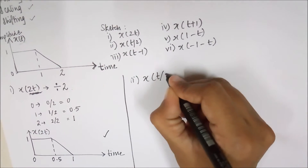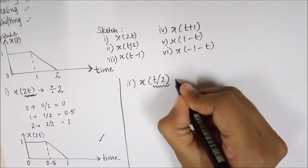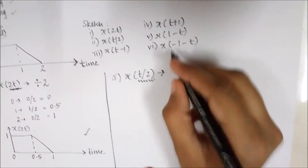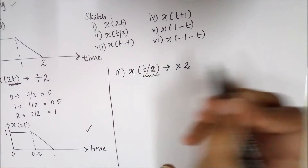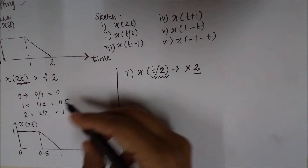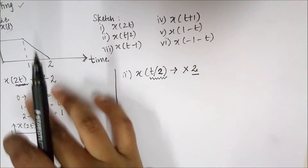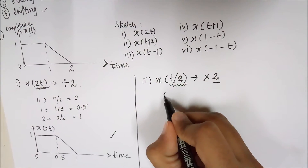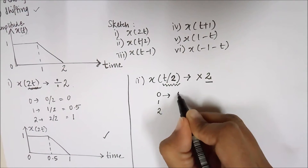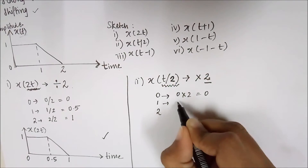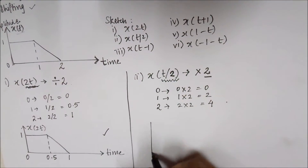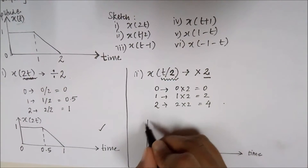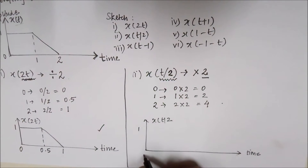Next we have to solve x(t/2). They have given t divided by 2, so we do the reverse which is multiplication. We multiply the values on the time axis by 2. The values are 0, 1, and 2: multiplying 0 by 2 gives 0, 1 by 2 gives 2, and 2 by 2 gives 4. Amplitude remains as it is.